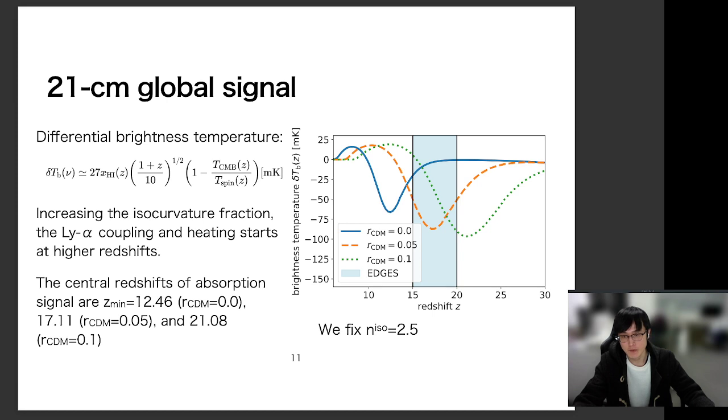So this is the 21-centimeter global signal for different values for the isocurvature fraction, RCDM. So when the isocurvature fraction is increasing, the matter power spectrum on small scales are amplified more, and the first stars and first galaxies form earlier. As a result, the Lyman alpha coupling and heating starts at higher redshift.